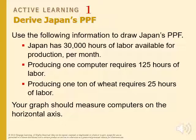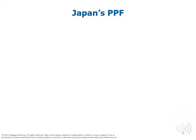Can you graph Japan's PPF? Pause the video and give it a shot. We have computers on the horizontal axis. If Japan uses all of its 30,000 labor hours to produce computers, it will have 240 computers. The calculation is: 30,000 divided by 125 hours per computer equals 240 computers. For the vertical intercept: it takes 25 hours to produce a ton of wheat, and 30,000 divided by 25 gives us 1,200 tons of wheat.